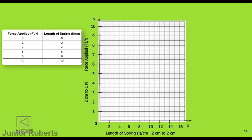For our first row, when the force applied is zero newtons the length of the spring is also zero. Since force is on the y-axis, we find zero on the y-axis, and the corresponding length value is also zero — so our first point is right here. I've gone ahead and plotted all the points; each point corresponds to a set of data in the table, from the first to the last.